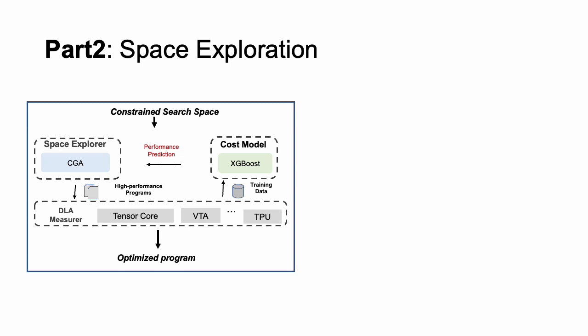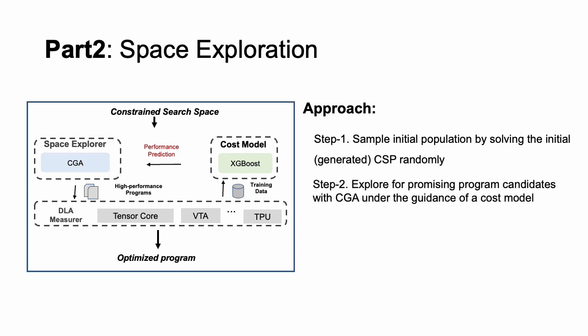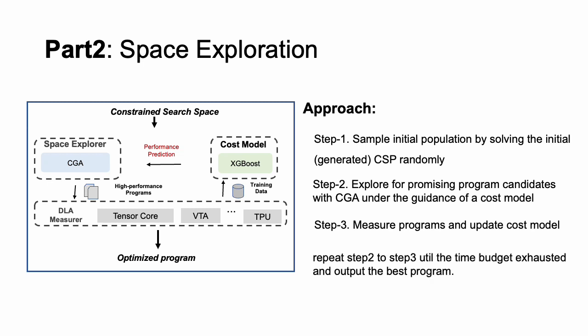The space exploration part mainly consists of three steps. Step 1, we sample the initial population by solving the generated CSP randomly with a solver. Step 2, we explore for promising program candidates with CGA, using a cost model to predict the score. Step 3, we measure the programs and update the cost model. We repeat steps 2 to 3 until the time budget is exhausted and output the best program.